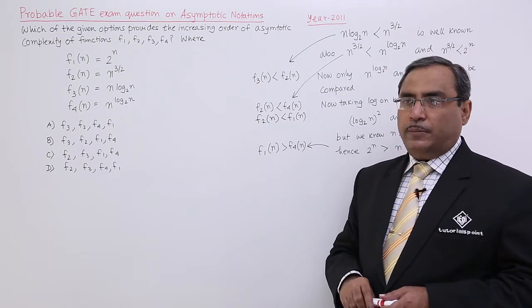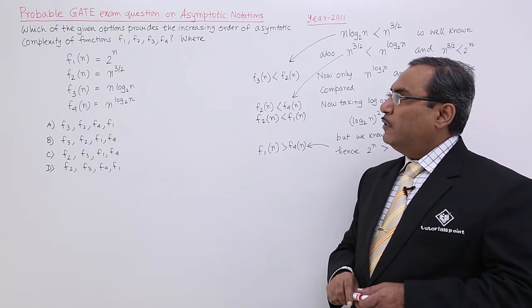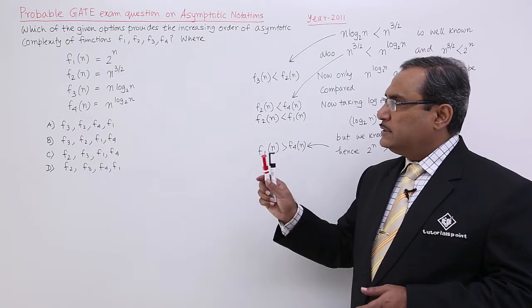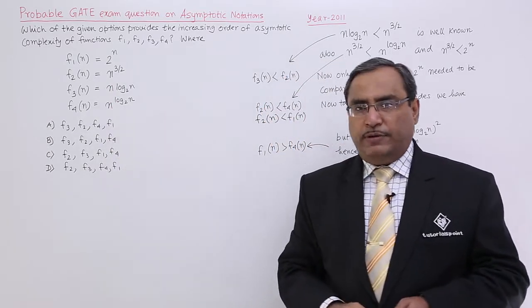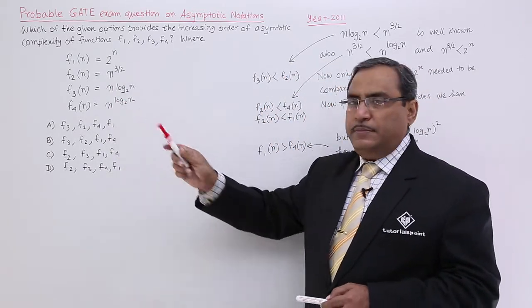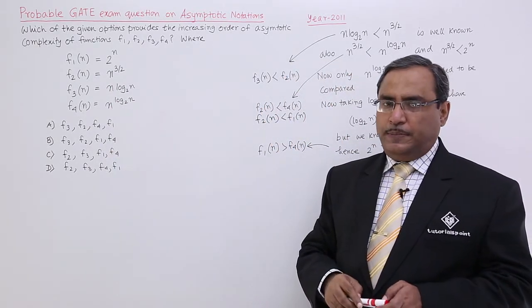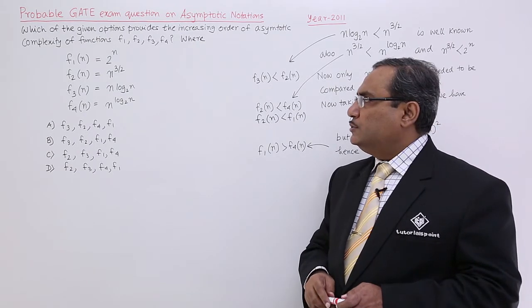These sort of questions are very common, where f1 equals f(n) equals this and f2(n)... these functions are given and we have to arrange them in the increasing order. That means, in the ascending order, we have to arrange them.